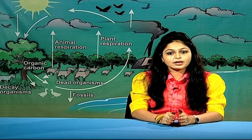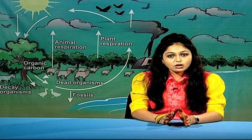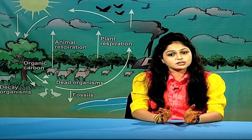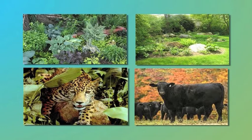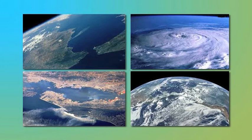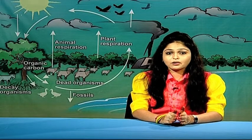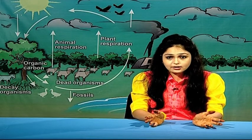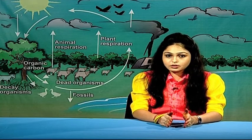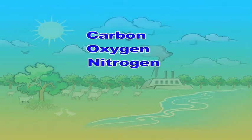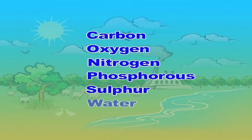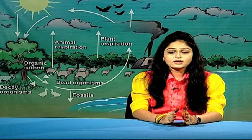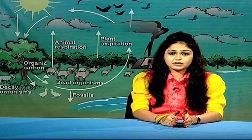The term biogeochemical tells us that biological, geological and chemical factors are involved. The plants and animals that live and then die are the bio part. The earth that they decompose into comprises the geo part, and the process by which organic matter returns to chemical elements in the earth is explained by the chemical part. These chemical nutrients include carbon, oxygen, nitrogen, phosphorus, sulphur and water. These elements cycle in either a gas cycle or a sedimentary cycle.